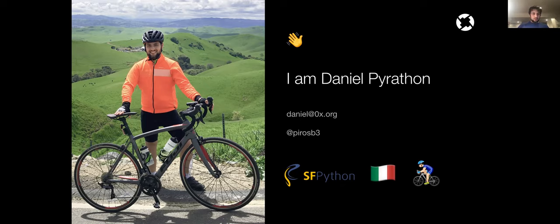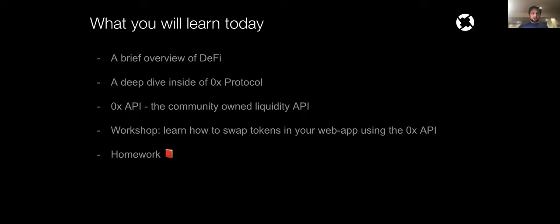Today I'm going to be talking about a couple of things. First, we're going to do an overview of what DeFi is — decentralized finance. Then we're going to dig deeper into one use case, which is decentralized exchanges, specifically the 0x protocol. And then we're going to get practical: we'll actually be building our own exchange UI and using the 0x API, a very simple API to swap tokens. And then there'll be homework — I'll be giving you a small assignment.